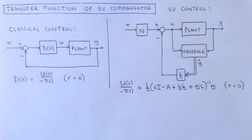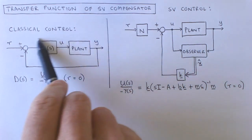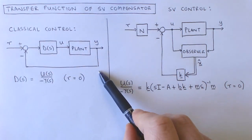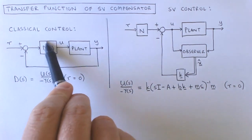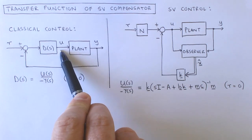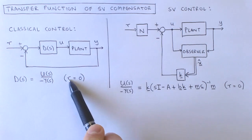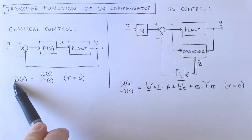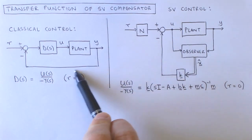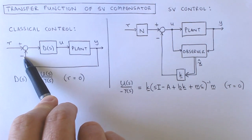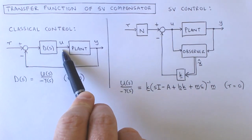We have now looked at all three components of the state variable compensator and it is insightful to view it as a classical controller. In a classical control system, the error between the reference input and the plant output is fed into the controller and the output of the controller is the plant input u. If we ignore the reference input, the transfer function of the controller is described as the transfer function from minus the plant output y to the plant input u.